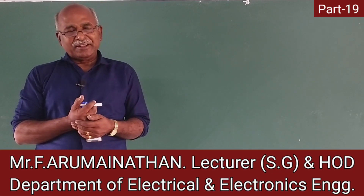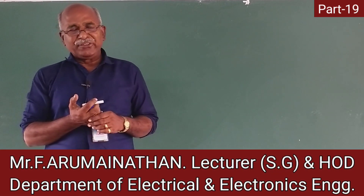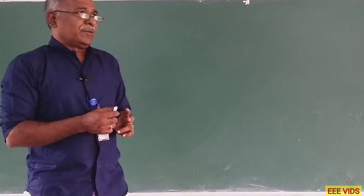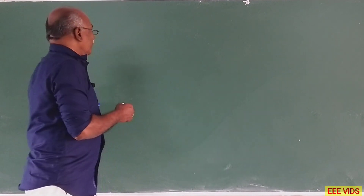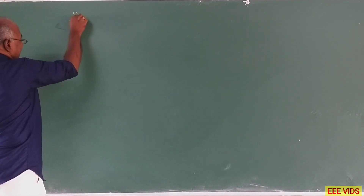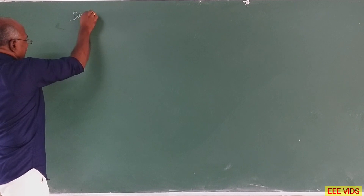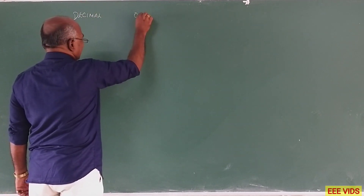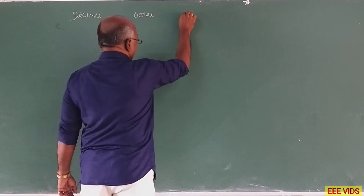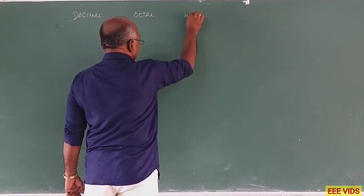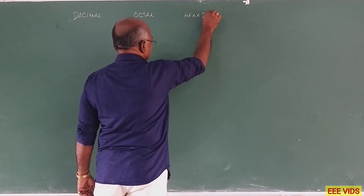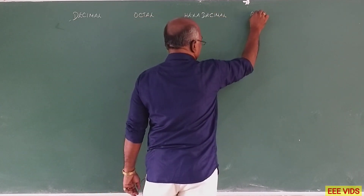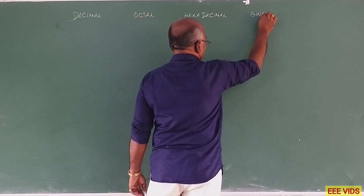Number system. What is the number system? It is basic, we will refresh the topic. We will follow the number system. There are four types: the decimal number system, octal, hexadecimal, and binary. All types of number systems are used.